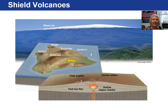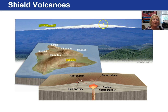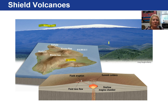continuously outpouring basaltic, non-viscous lava. In the background here we have a picture of Mauna Loa. It is high enough in the air that it is snow-covered, so on the Big Island of Hawaii you can go from a desert climate to a tropical rainforest to snow-topped mountains.